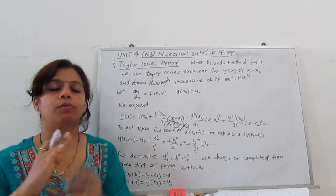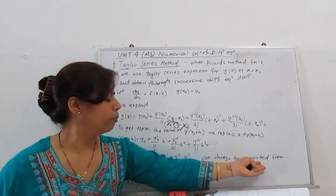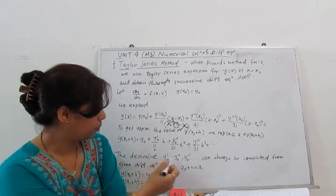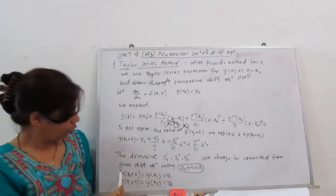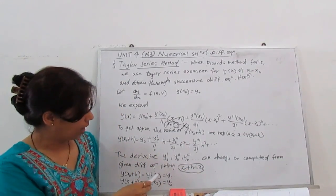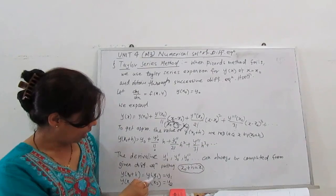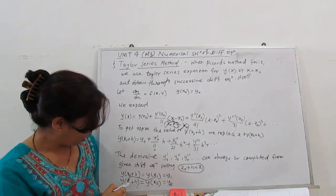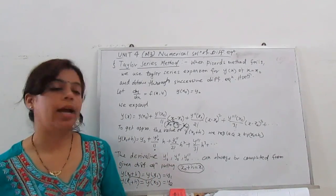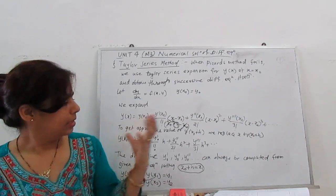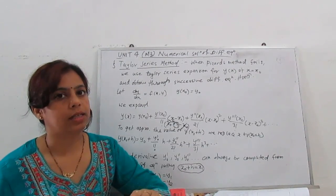The derivatives y'₀, y''₀, y'''₀ can always be computed from the given differential equation. Putting x₀ + h = x₁, so y(x₀ + h) = y(x₁) = y₁. Then again, like Picard iteration, put x₁: y(x₁ + h) = y₂, y(x₂ + h) = y₃, and so on. This is the solution for the given differential equation with the help of Taylor series expansion.